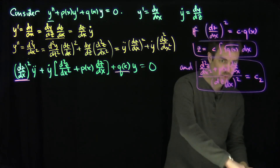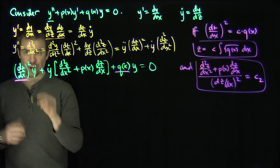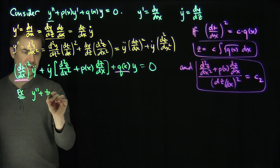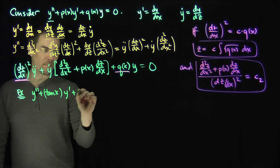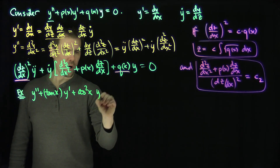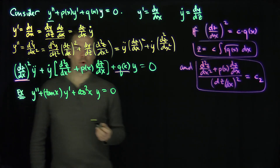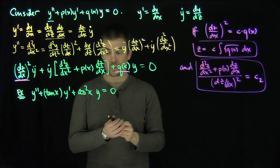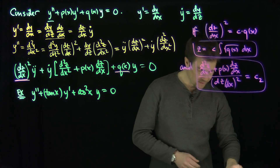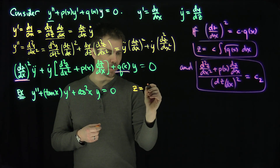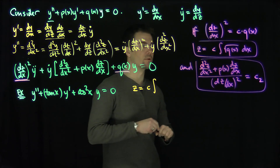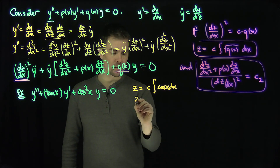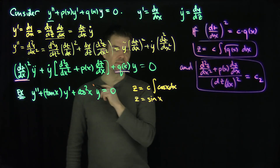Let's see an example of when this works. Here's the problem: y double prime plus tangent of x · y prime plus cosine squared of x · y equals zero. Cosine squared is playing the role of q of x. So let's introduce a new variable z — it's going to be a constant times the integral of the square root of q of x dx, and the square root of cosine squared is just cosine dx. So the coordinate transformation we're going to do is z equals sine of x.